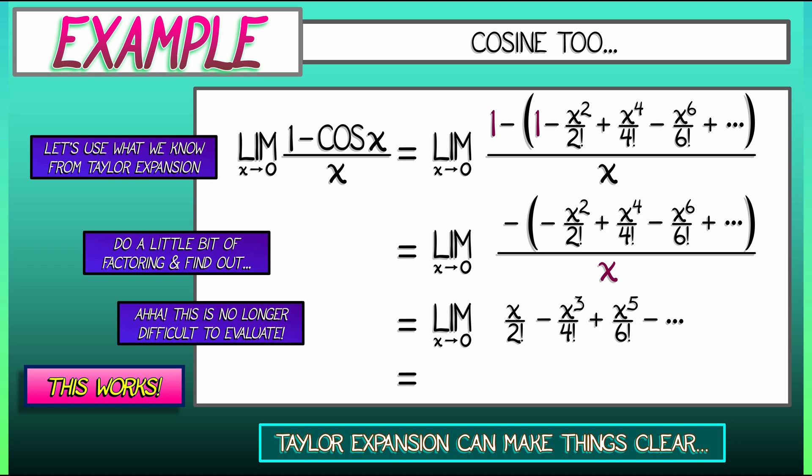Since every single term of this series has an x in it, when you evaluate at x equals zero, you get zero. Again, this is why the limit as x goes to zero of 1 minus cosine of x over x vanishes.